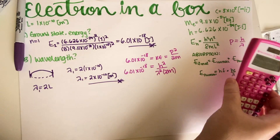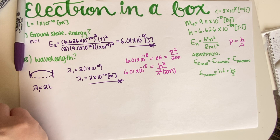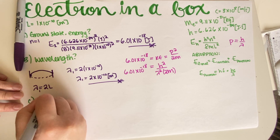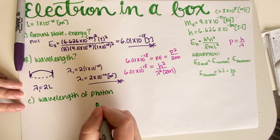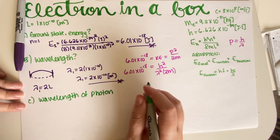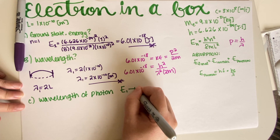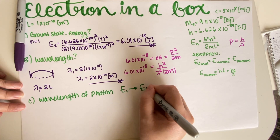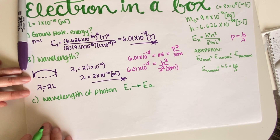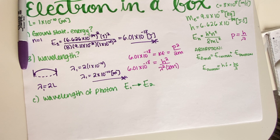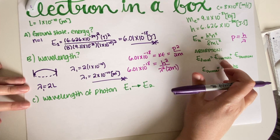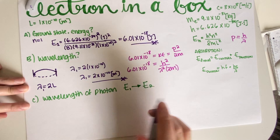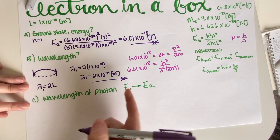For part C we have to find the wavelength of the photon that must be absorbed in order to go from the ground state to the first excited state. We use the provided absorption equation: E_final = E_initial + E_photon. Here E_final is E₂ and E_initial is E₁.